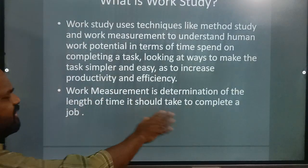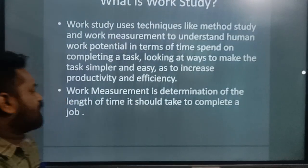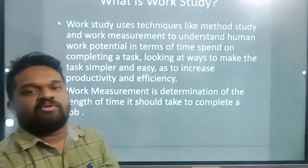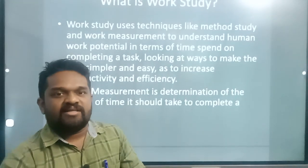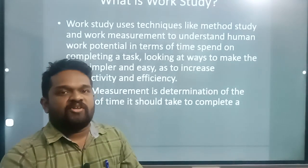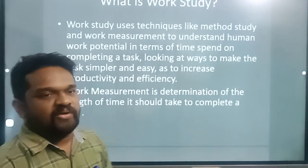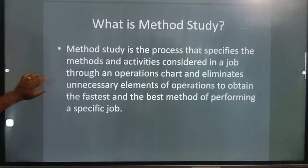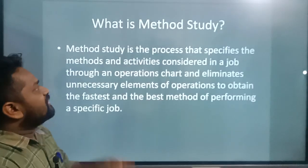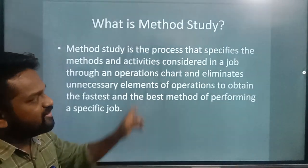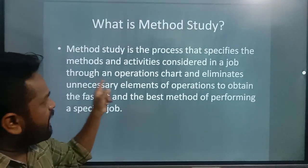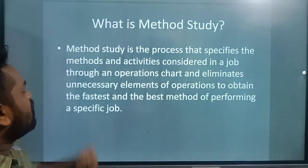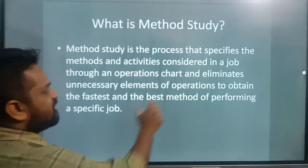Work measurement is the determination of the length of time it should take to complete a job — for example, grinding using a particular type of grinding machine. Method study is a process that specifies methods and activities considered in a job through operations.